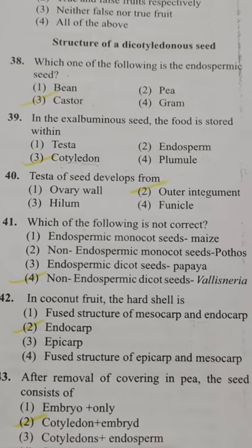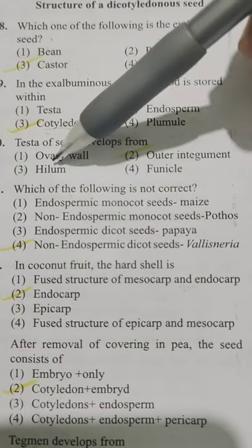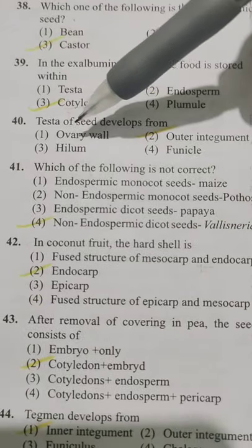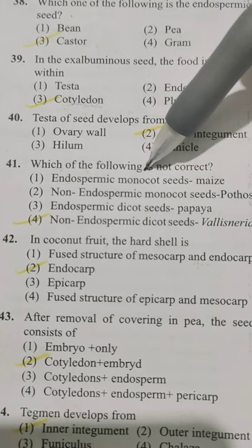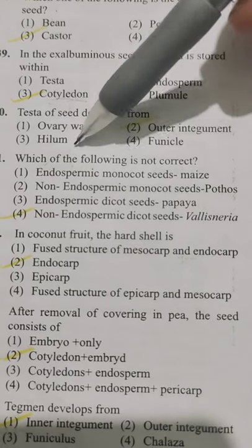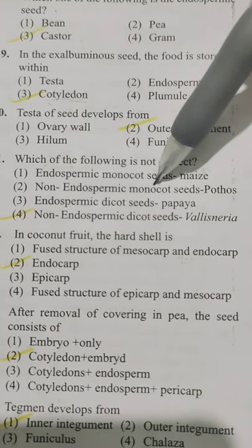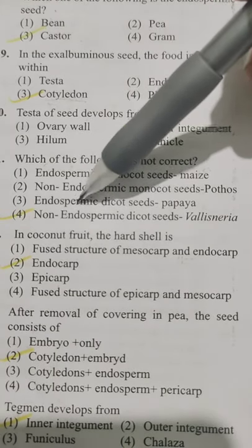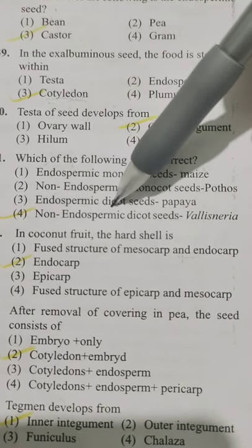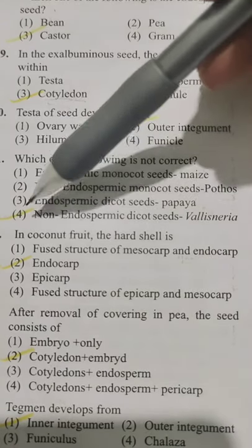Testa of seed develops from — Option 1 ovarian wall, Option 2 outer integument, Option 3 hilum, Option 4 funicle. Testa develops from the outer integument — Option 2. Which of the following is NOT correct? Option 1 endospermic monocots seeds: maize; Option 2 non-endospermic monocots: Pothos; Option 3 endospermic dicots: papaya; Option 4 non-endospermic dicot seeds: Vallisneria. Option 4 is incorrect.